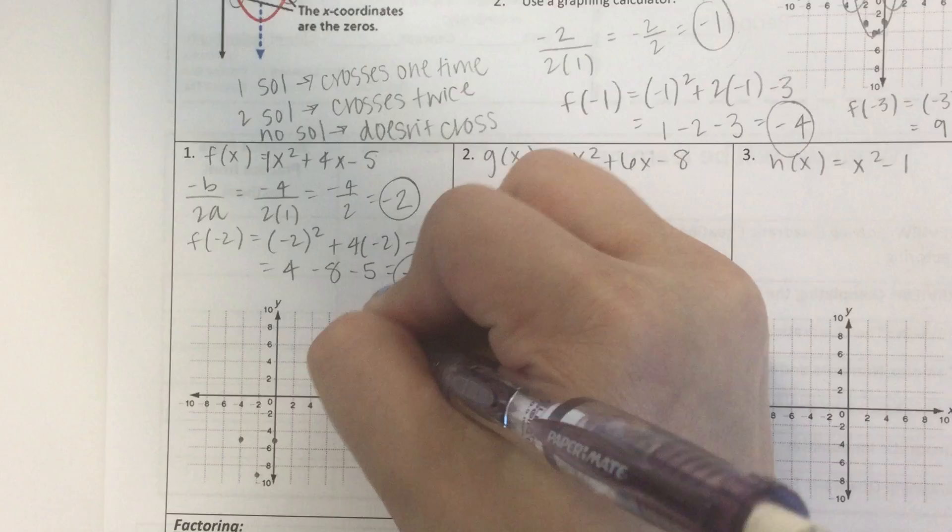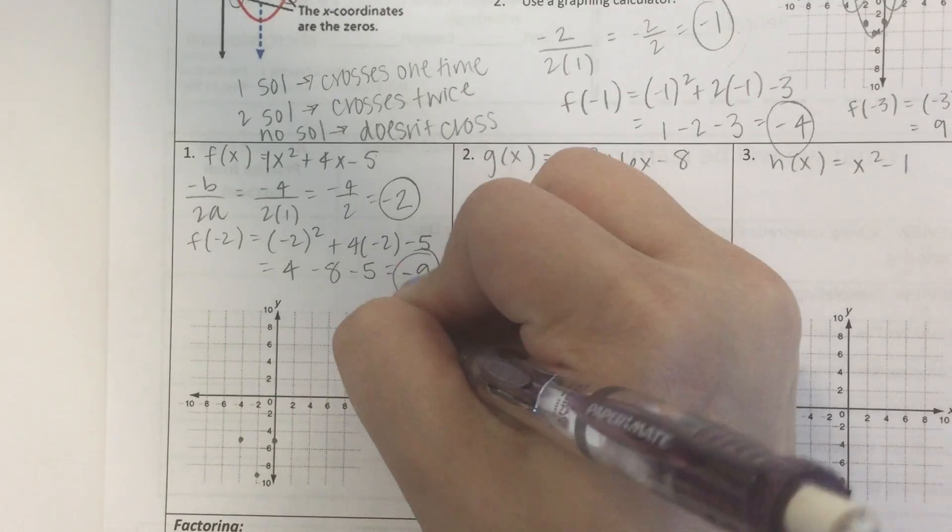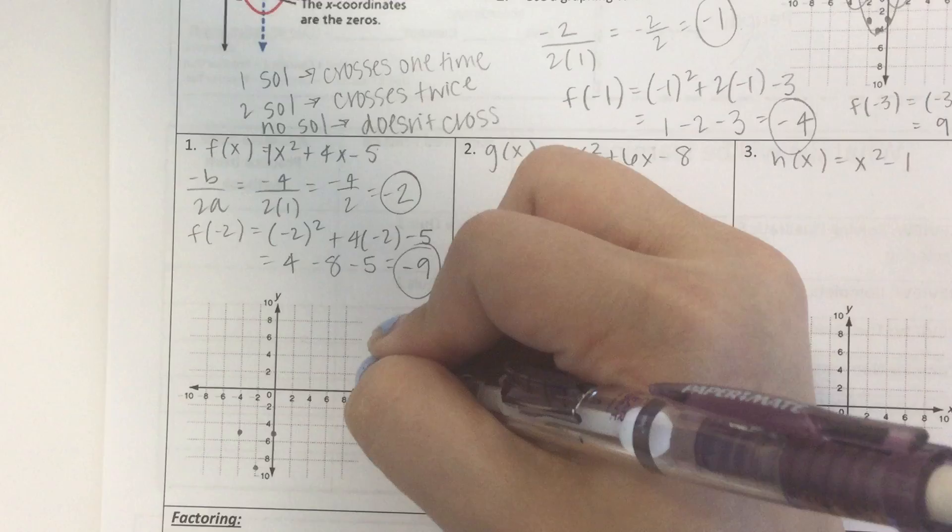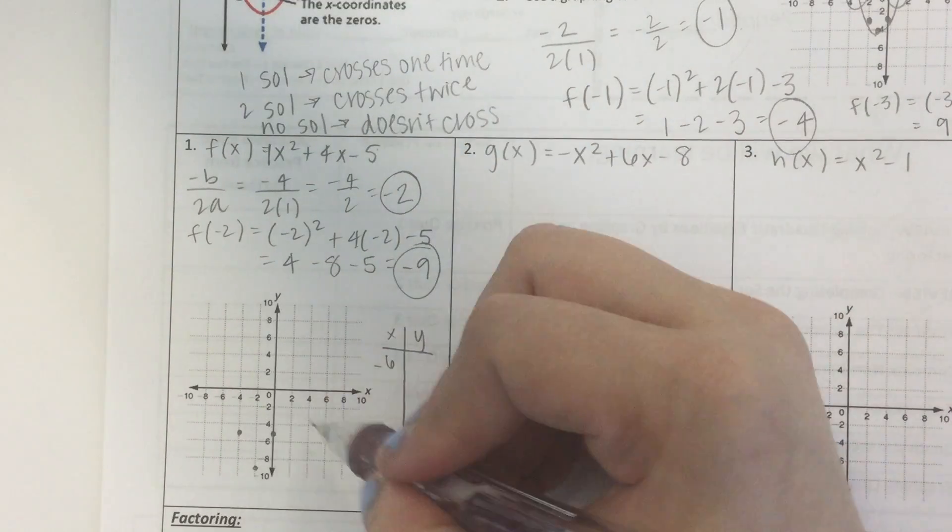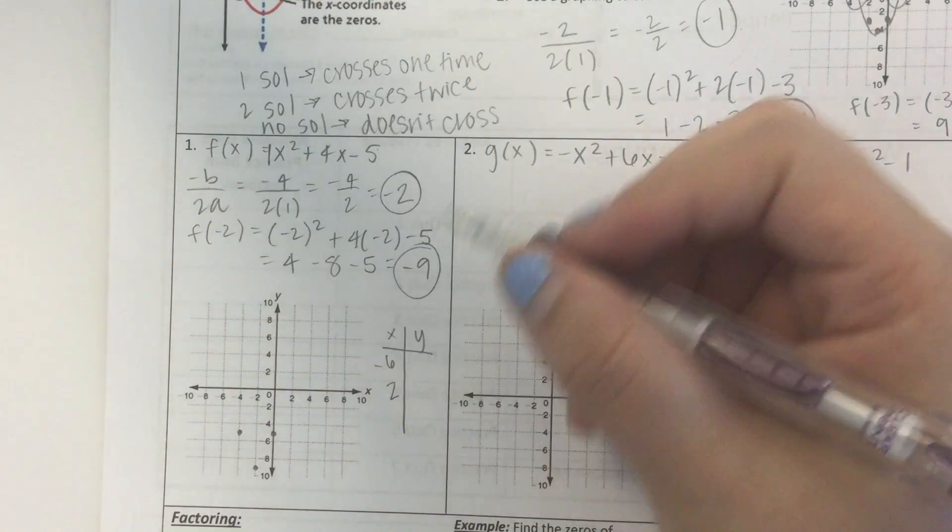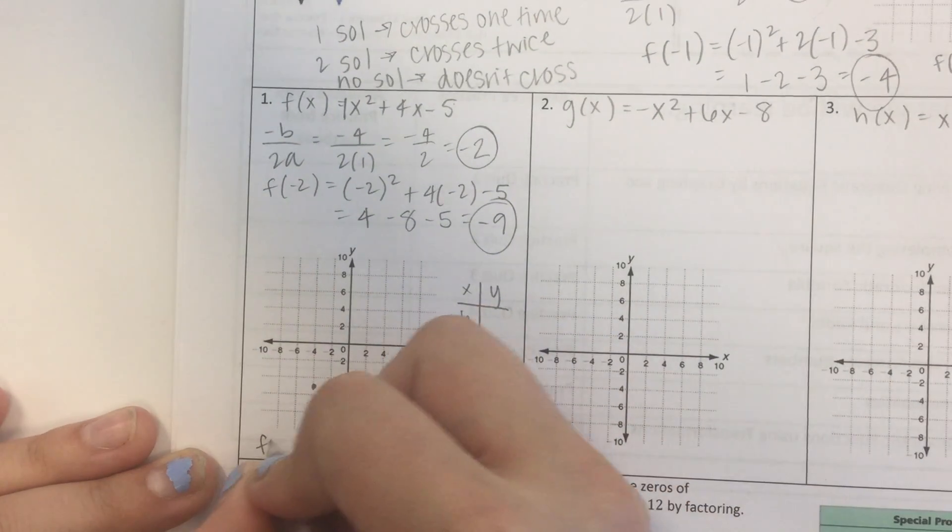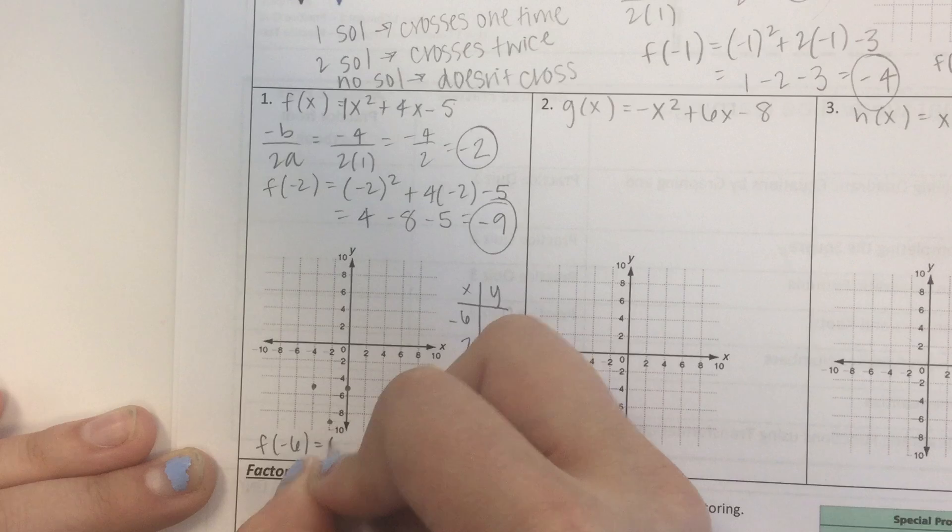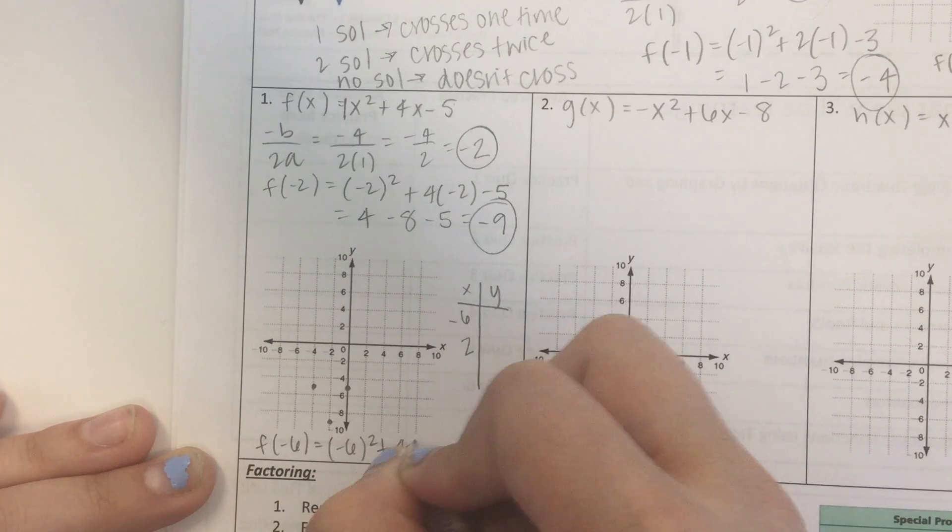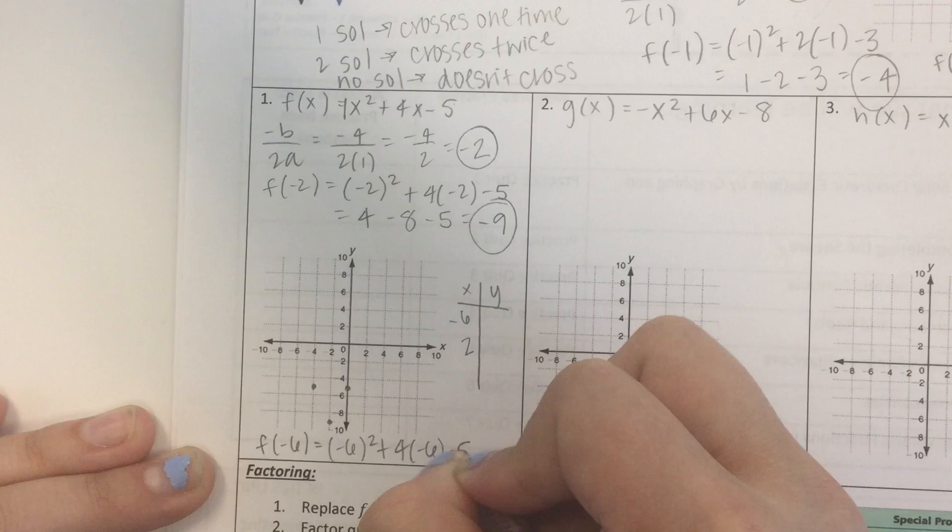So let's make our little table. I'm not going to make it as big as the last one because that took up a lot of space. So let's try negative 6 and 2. So if I plug in negative 6, I have f of negative 6 equals negative 6 squared plus 4 times negative 6 minus 5.